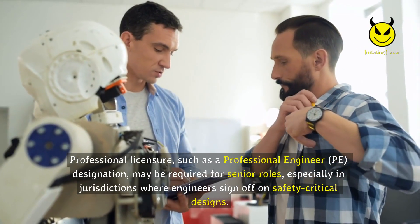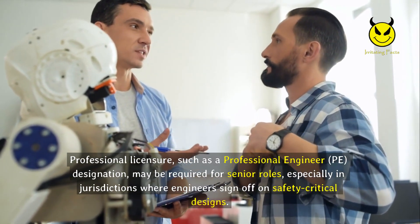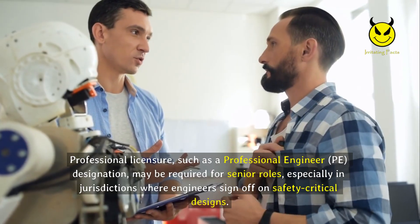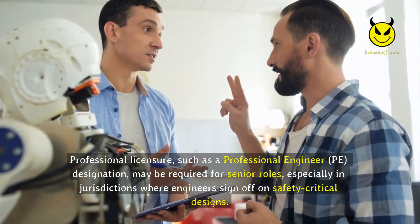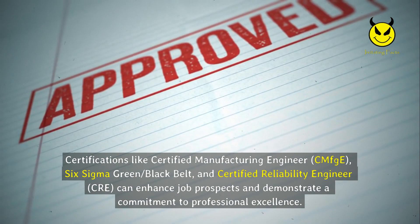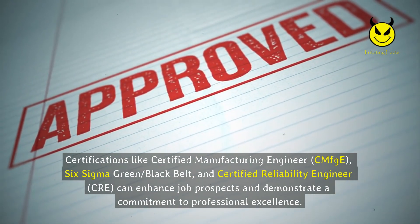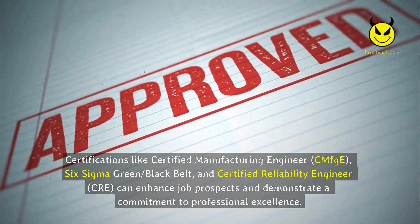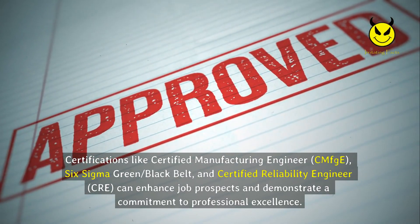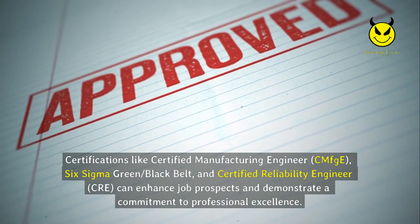Professional licensure, such as a Professional Engineer (PE) designation, may be required for senior roles, especially in jurisdictions where engineers sign off on safety-critical designs. Certifications like Certified Manufacturing Engineer (CMfgE), Six Sigma Green or Black Belt, and Certified Reliability Engineer (CRE) can enhance job prospects and demonstrate a commitment to professional excellence.